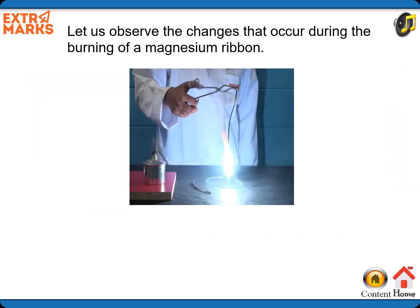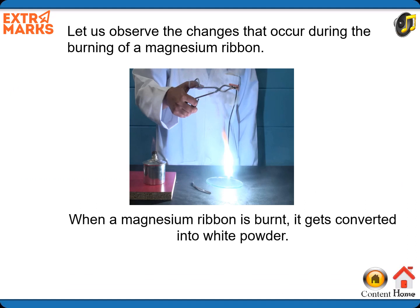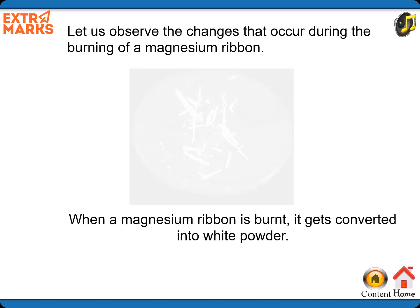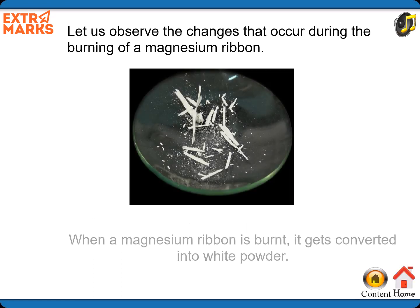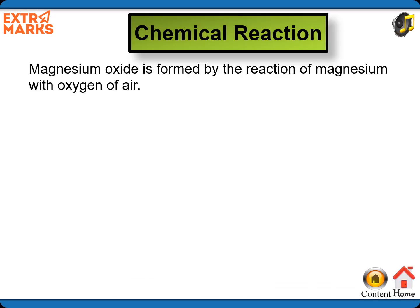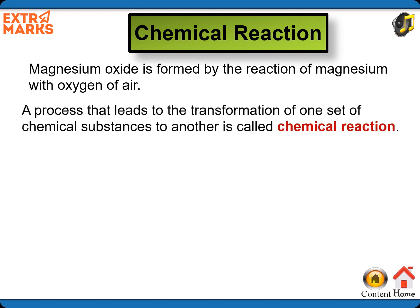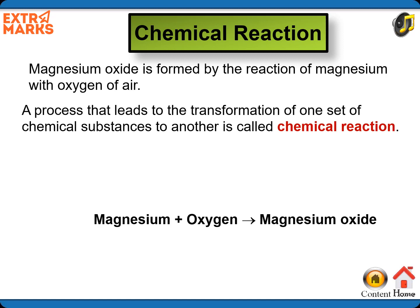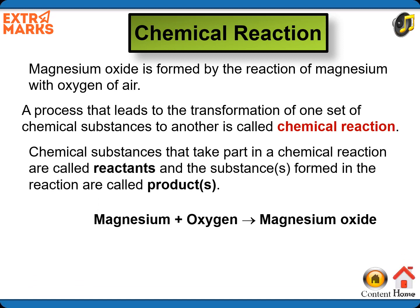Let us observe the changes that occur during the burning of a magnesium ribbon. When a magnesium ribbon is burnt, it gets converted into white powder. This white powder is magnesium oxide, formed by the reaction of magnesium with the oxygen of air. The process that leads to the transformation of one set of chemical substances to another is called a chemical reaction.